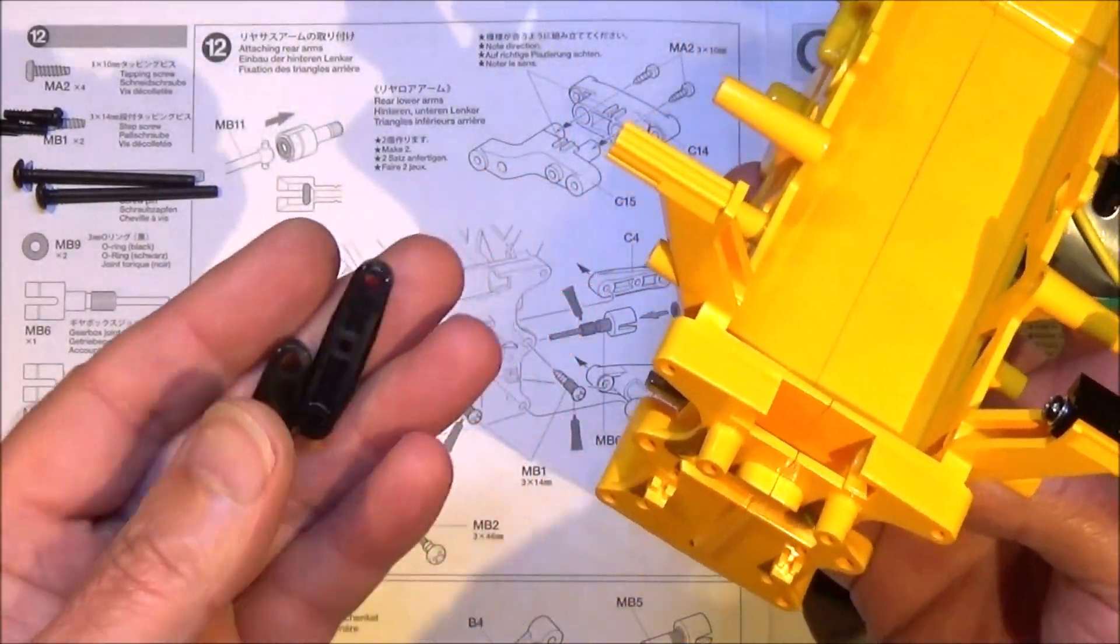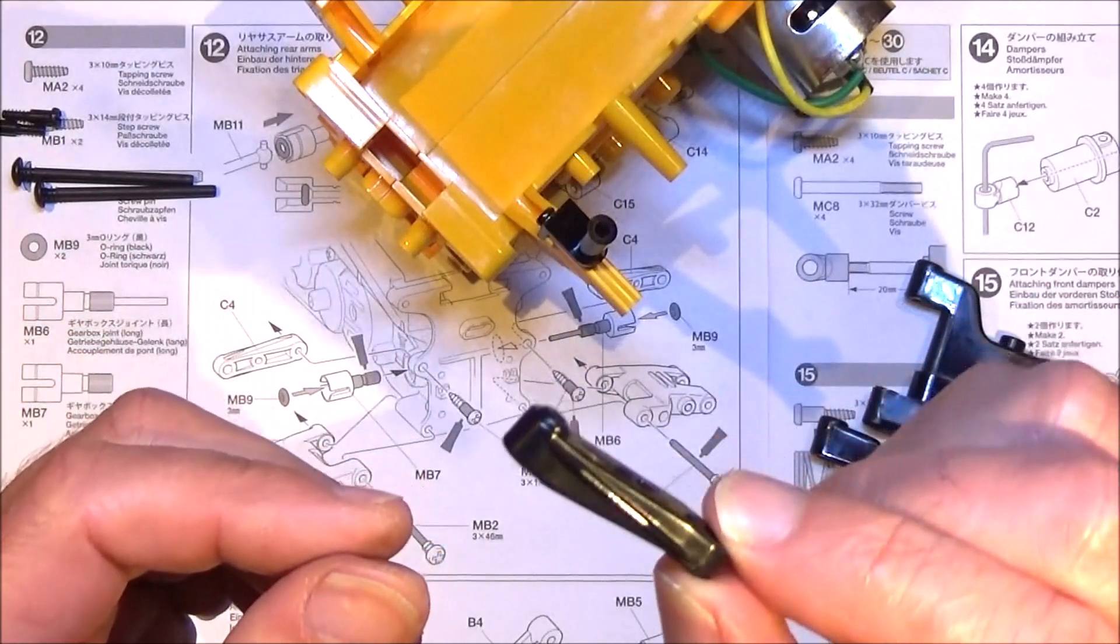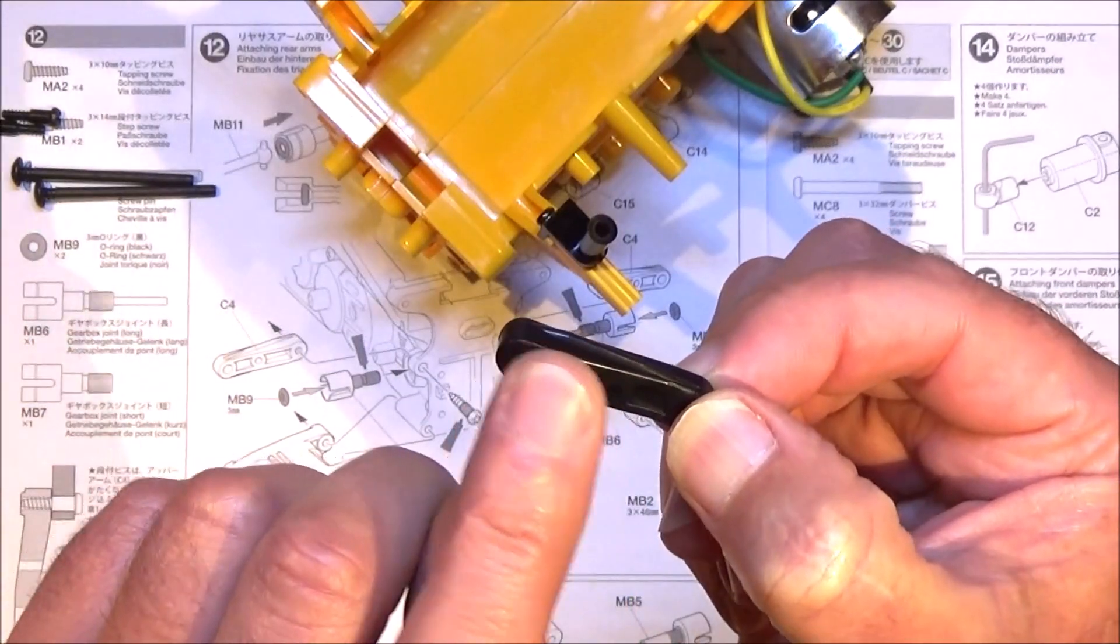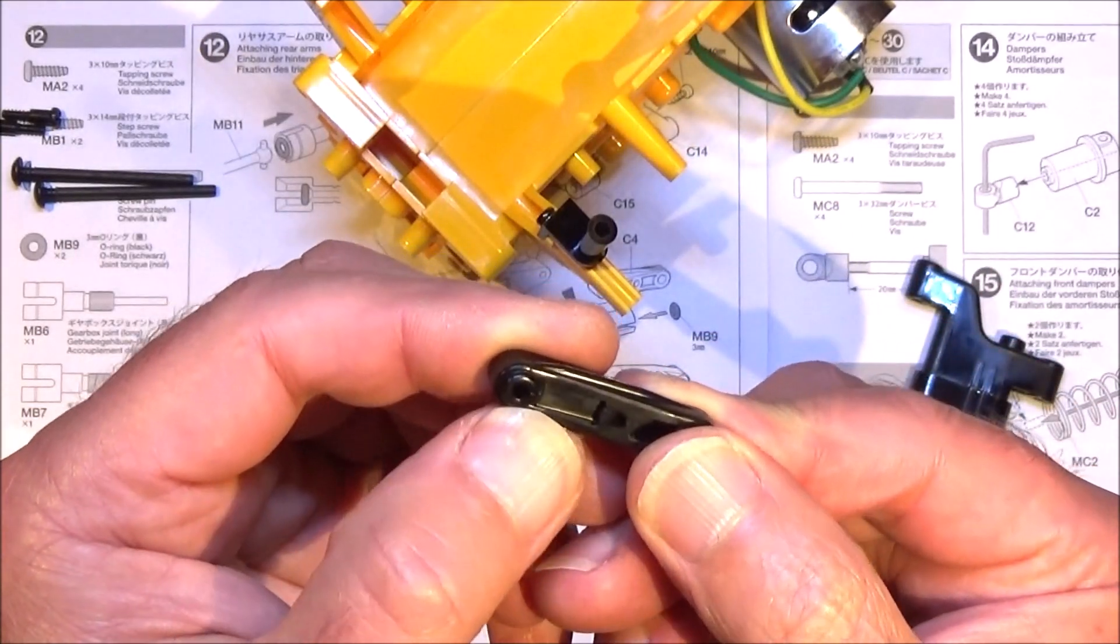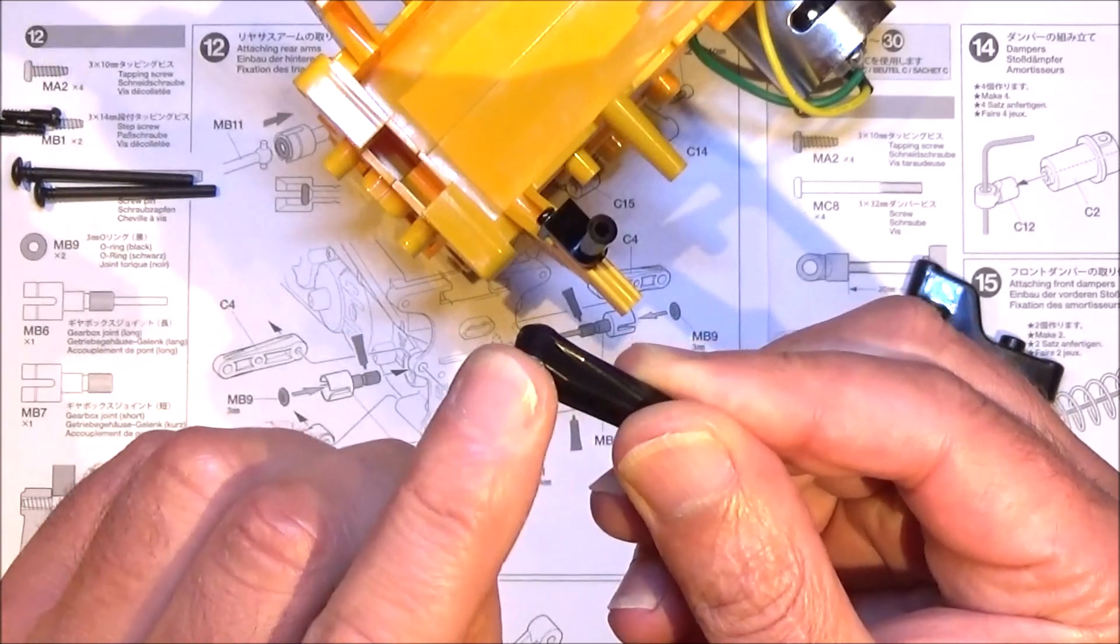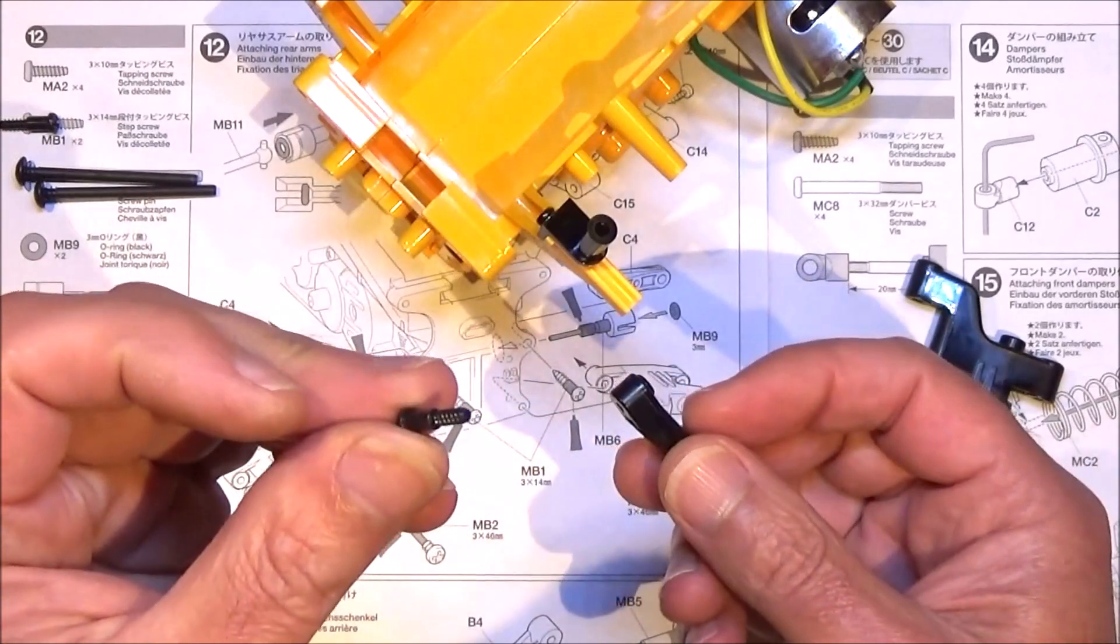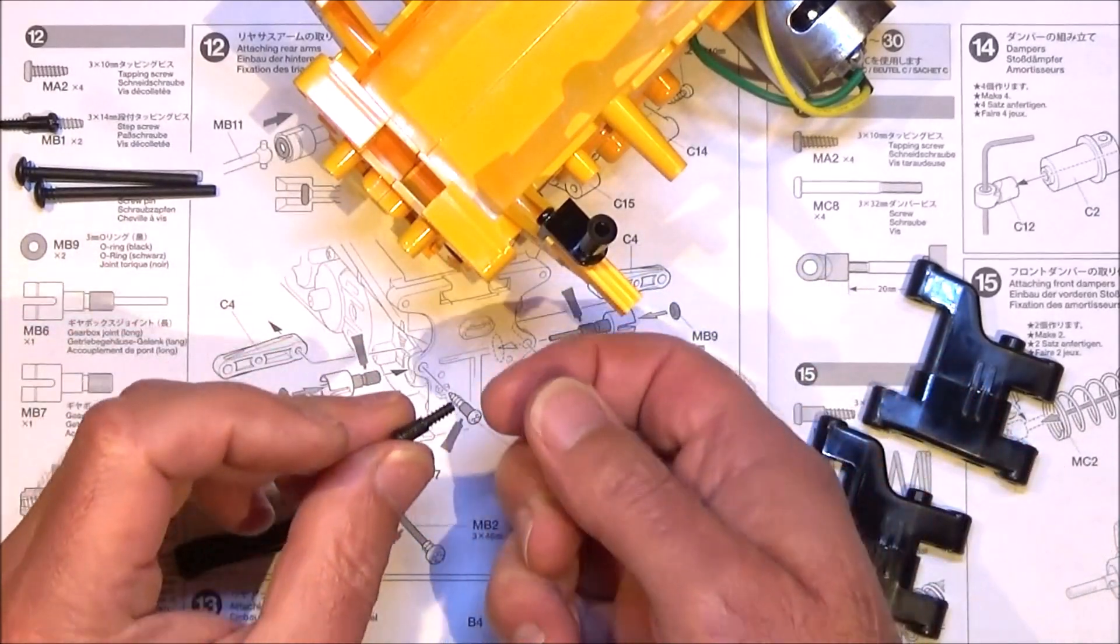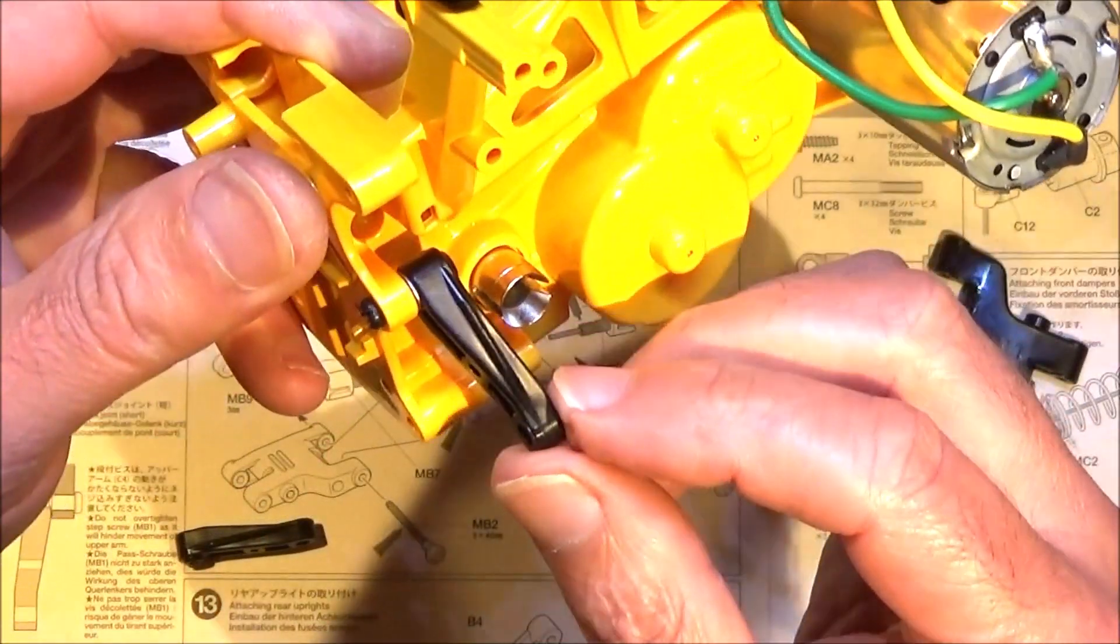Now we're going to fit part C4 which are the top arms. Again they only go one way around. It's very difficult to tell actually but the side with the flat where the hole is, the other side's got a lip. I think it's the flat side that goes up against the chassis. We fit these in with a step screw again and I will put a washer on the other side. It should be like this.